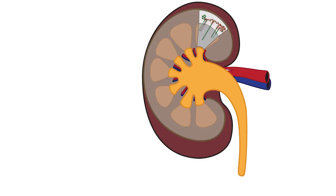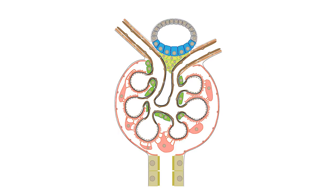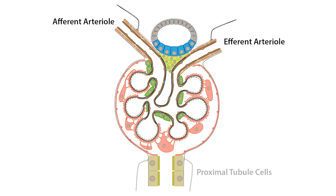In addition, these postganglionic fibers innervate the smooth muscle cells of the afferent and efferent arterioles, the cells of the proximal convoluted tubule, and the granular cells of the juxtaglomerular apparatus.